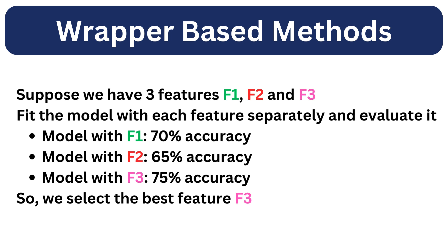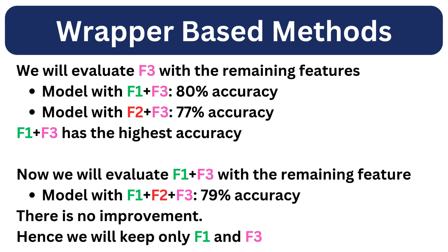Now we evaluate F3 in combination with the remaining features. When evaluated with F1, the accuracy increases to 80%. When evaluated with F2, the accuracy increases to 77%. So we select the best combination of F1 and F3 with 80% accuracy. Now we evaluate this combination with the remaining feature F2, and the resulting accuracy is 79% — no improvement. Hence we keep F1 and F3 only.